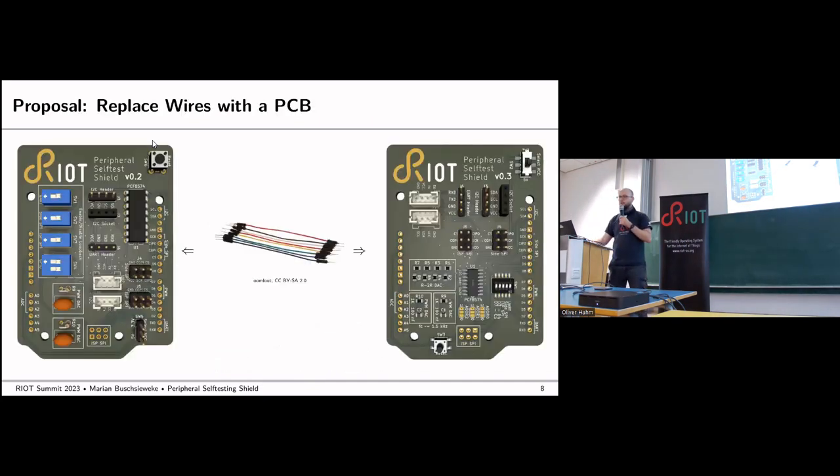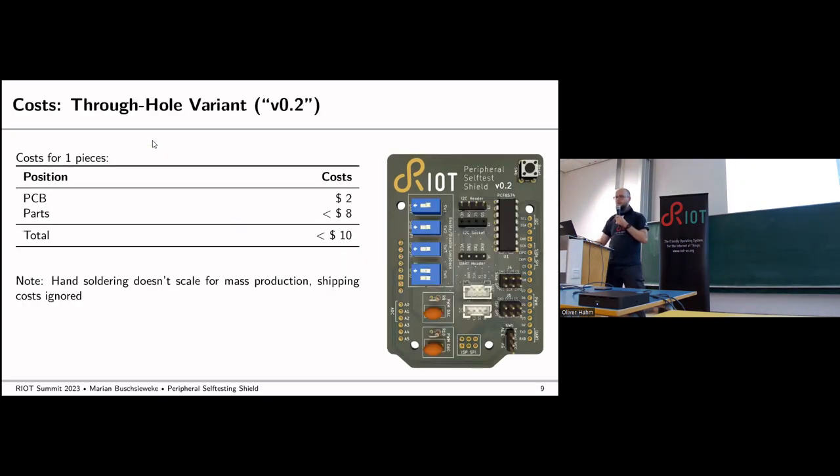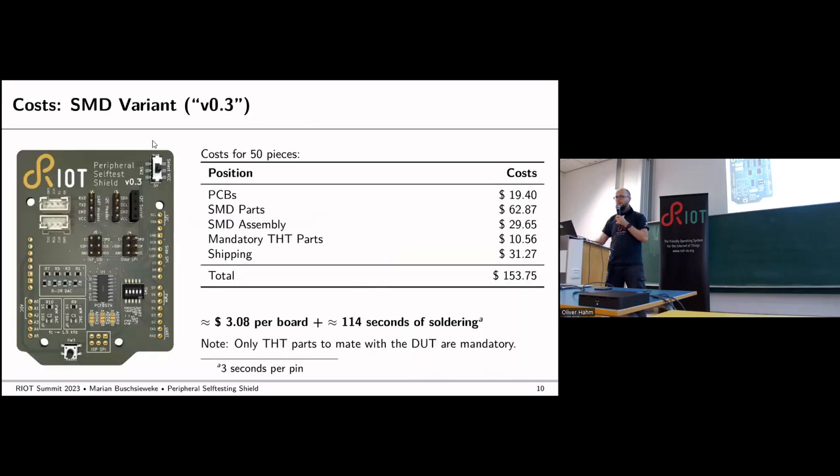But actually, it's quite a good fit for our development model because jumper wires distribute well since everyone has them around. Let's try to improve on that. The idea is to take those wires and turn them into PCBs. We have two versions of the PCB. The first version uses through-hole technology, and we can build one board for less than $10 with shipping. The same PCB as a surface mount technology variant costs $150 with shipping and taxes for 50 pieces, so $3 per PCB.